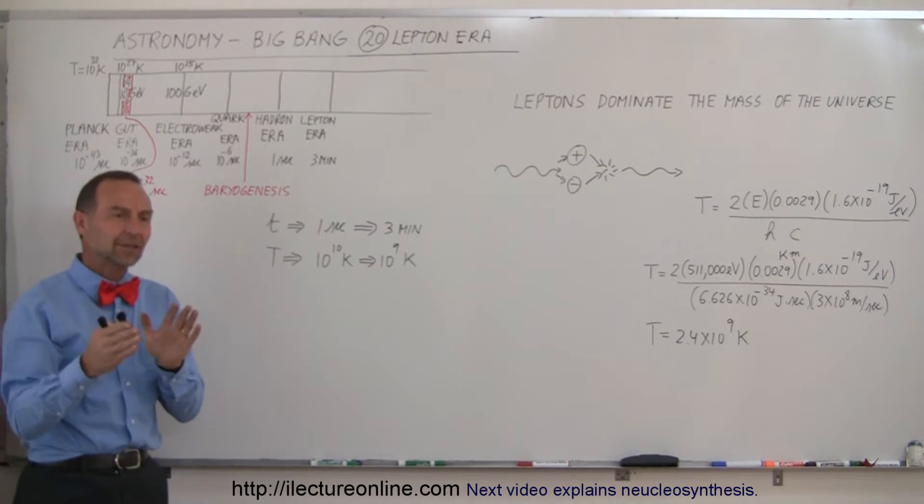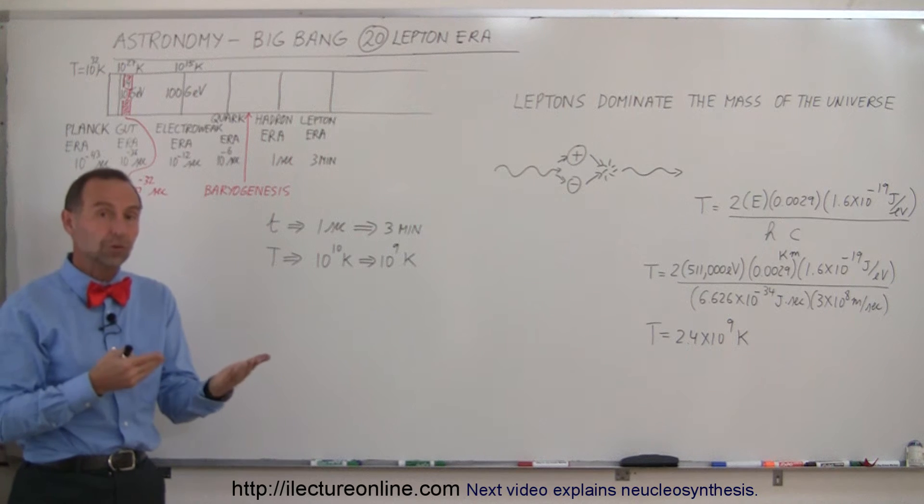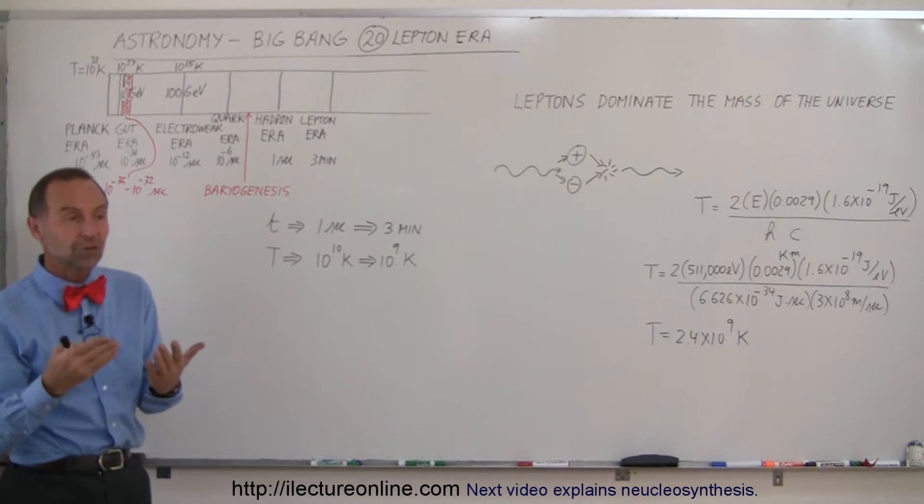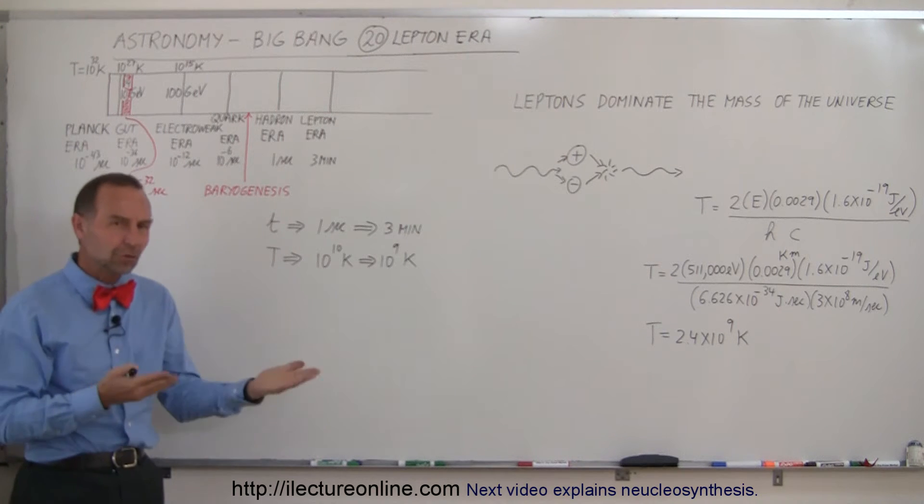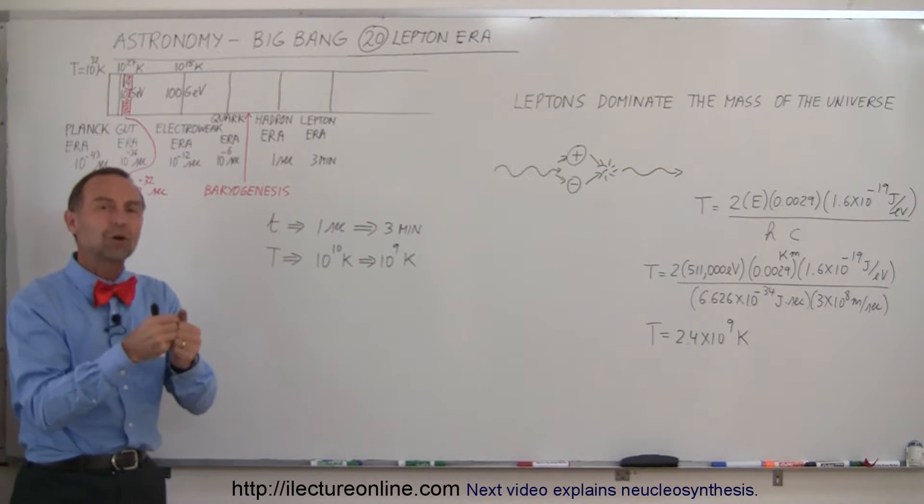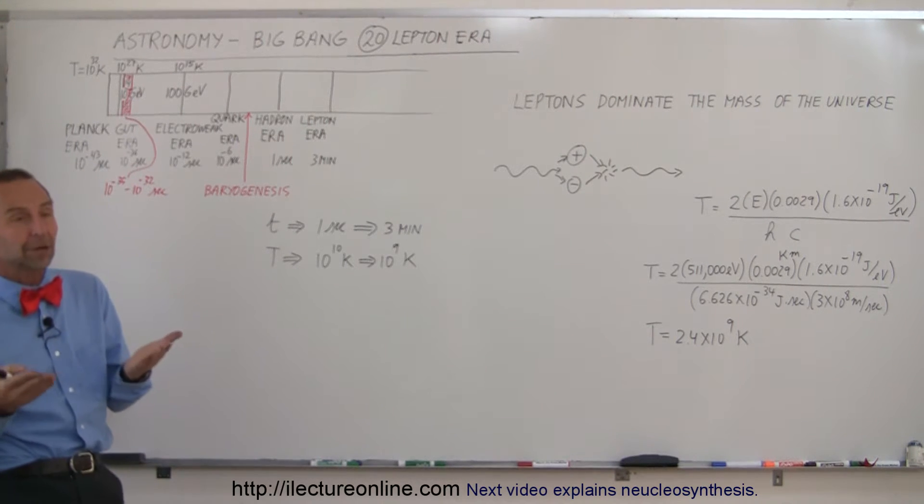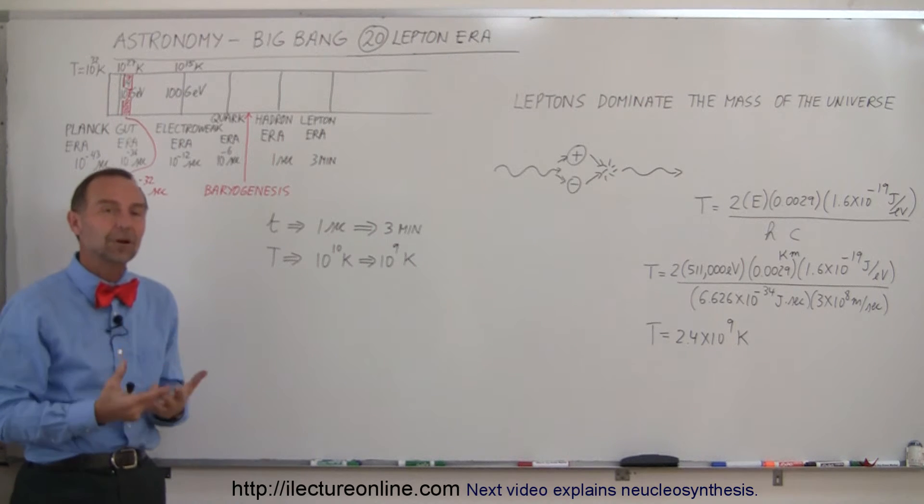Remember that in the previous period we had the Hadron Era, where the large particles like neutrons and protons were being produced, and when the annihilation occurred, when protons and anti-protons and neutrons and anti-neutrons came together and annihilated each other, we had a slight leftover of the particles compared to the anti-particles, and so the universe was now filled with the matter of these particles.